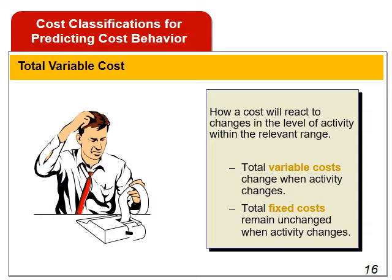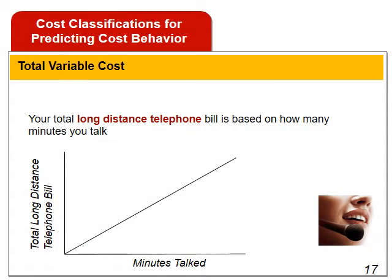The total variable cost varies in direct proportion to changes in the level of activity. For example, your long-distance telephone bill may be based on how many minutes you talk — the total bill varies with the number of minutes used. Managers often need to predict how costs will change in response to changes in activity. The activity might be the output of goods or services. Until now we have seen manufacturing costs — direct labor, manufacturing overhead, direct materials — and non-manufacturing costs: selling cost and administrative cost.